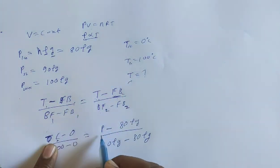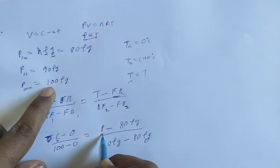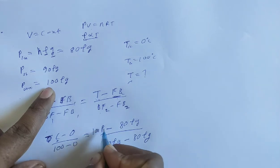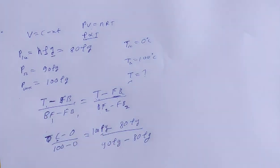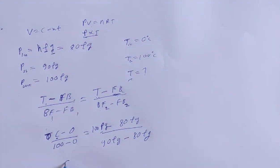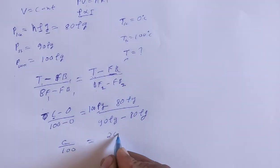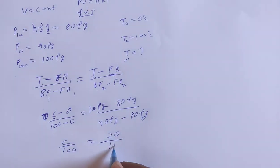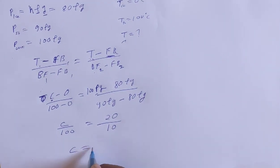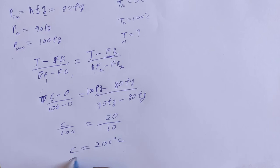Here we write 100 rho g. The rho g cancels out. So T divided by 100 equals 100 minus 80 which is 20, divided by 90 minus 80 which is 10. So here T is 200 degree Celsius.